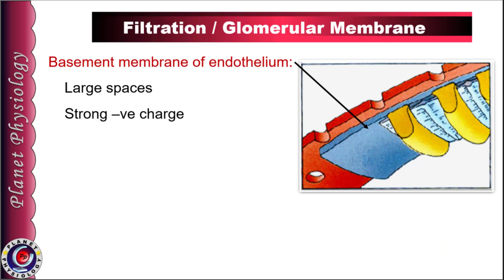The next layer in the barrier is the basement membrane of endothelial cells. It is a gel-like matrix mainly consisting of laminins, type 4 collagen, and other proteoglycan filaments. It also has large spaces between them and a strong negative charge, so it also prevents filtration of plasma proteins.